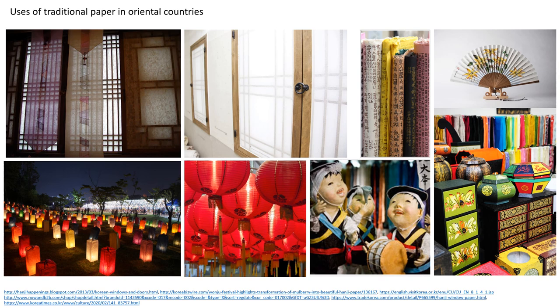The traditional mulberry paper is very durable and known to have survived for almost 1,000 years. It is often applied on the doors and windows of traditional houses as a curtain material, since light can pass through. Apart from usage as a writing surface, the traditional paper is used for making traditional lamps, dolls and dummies for exhibition, boxes, traditional hand fans, and packaging materials.